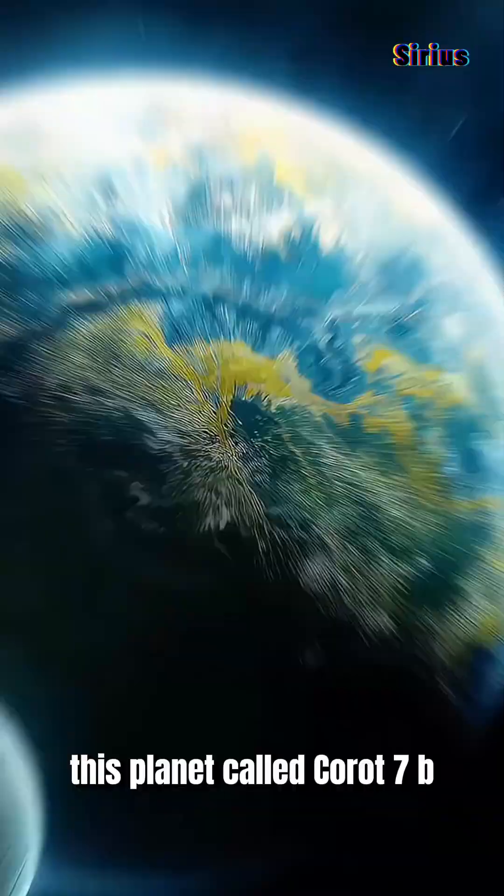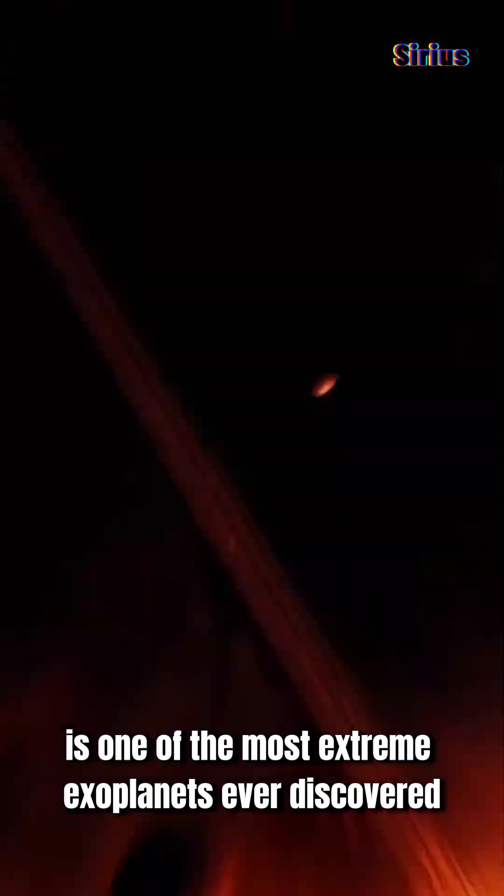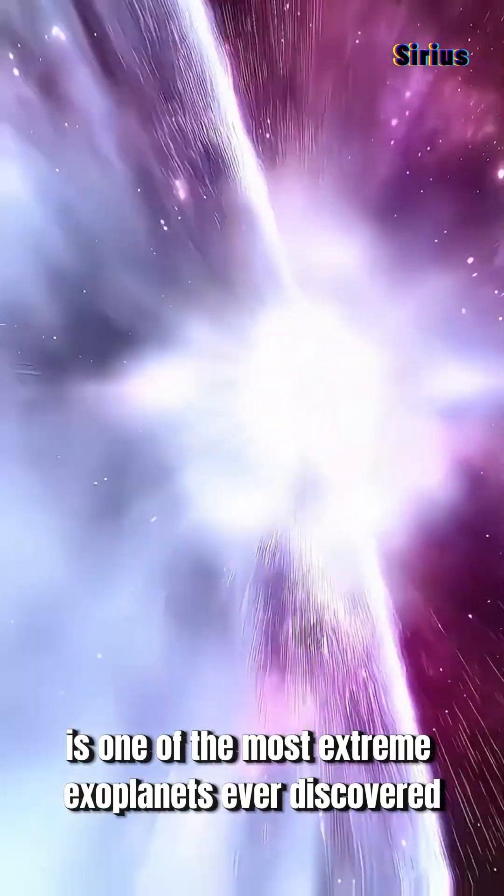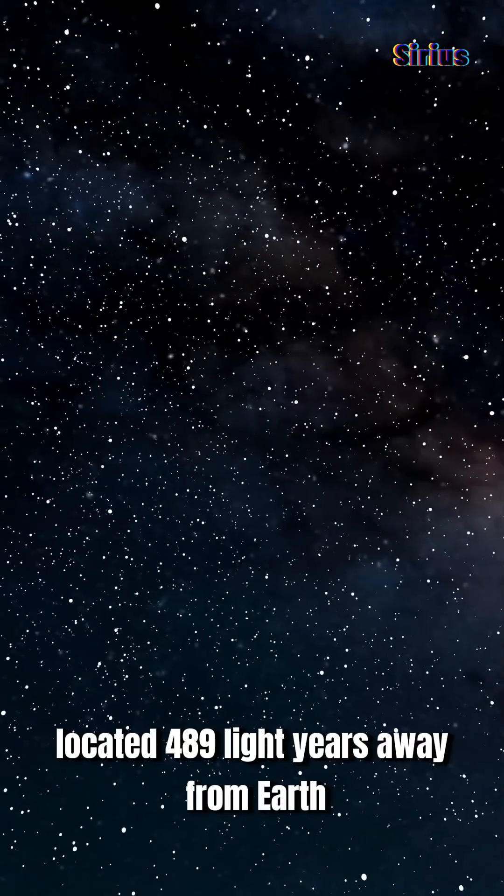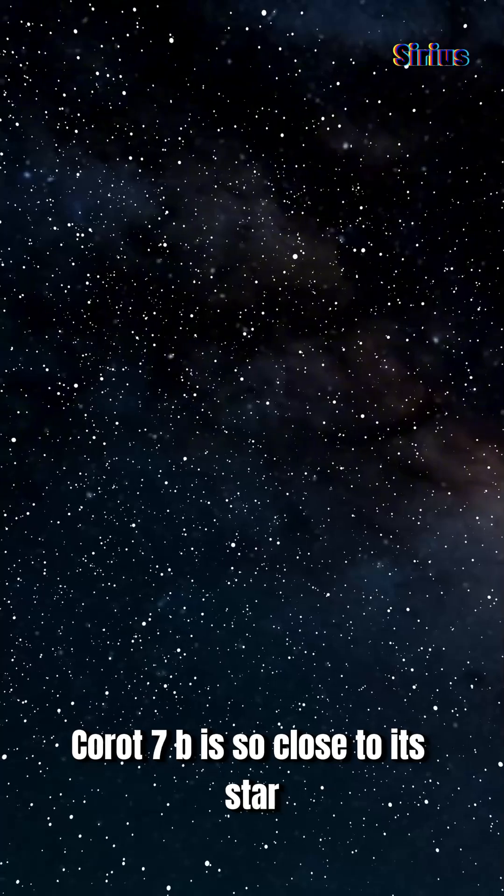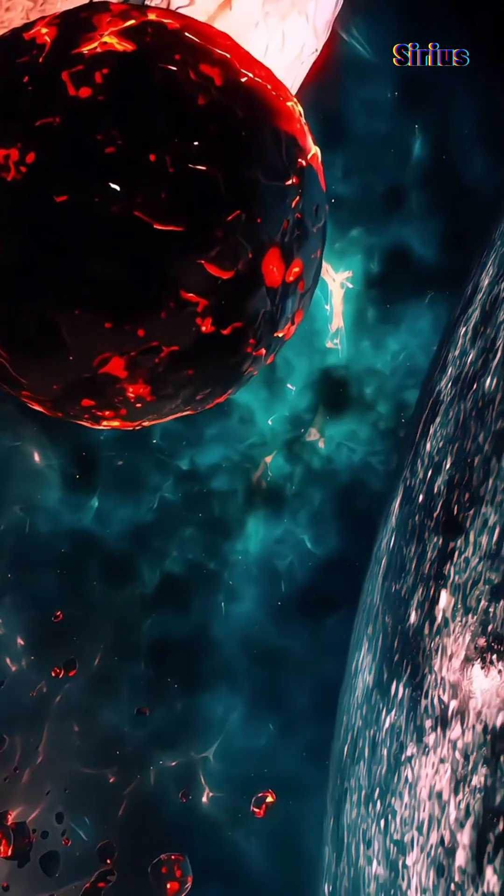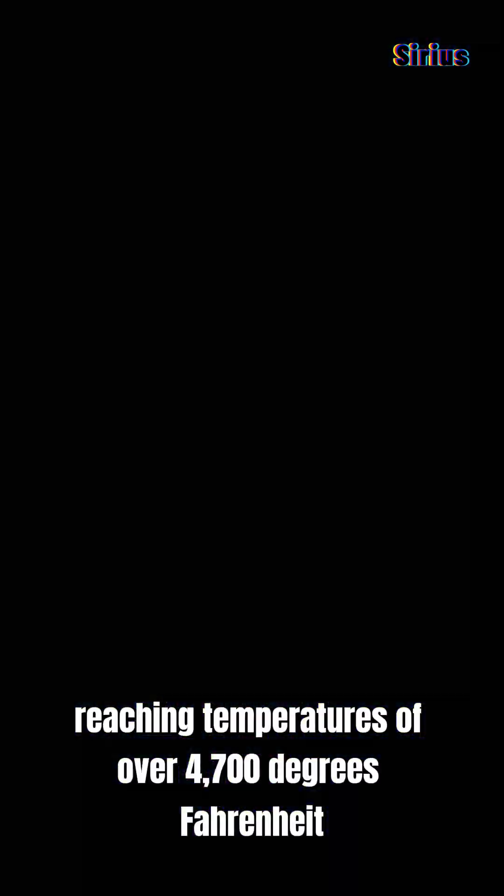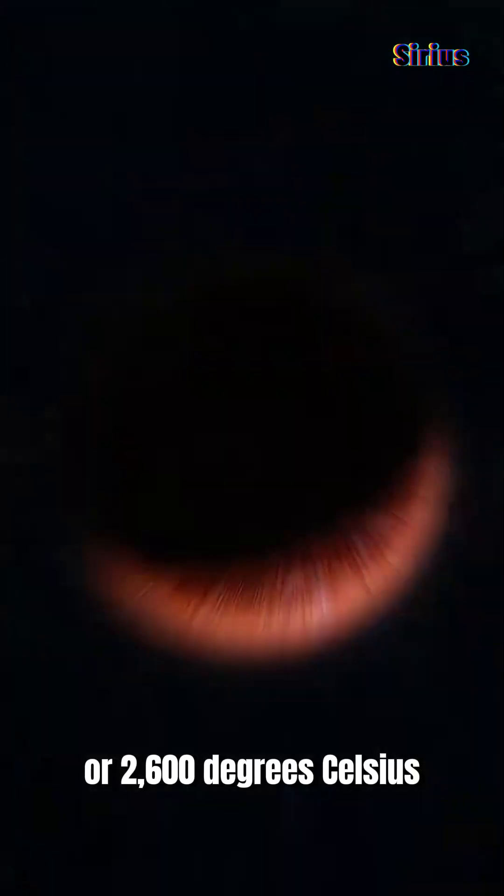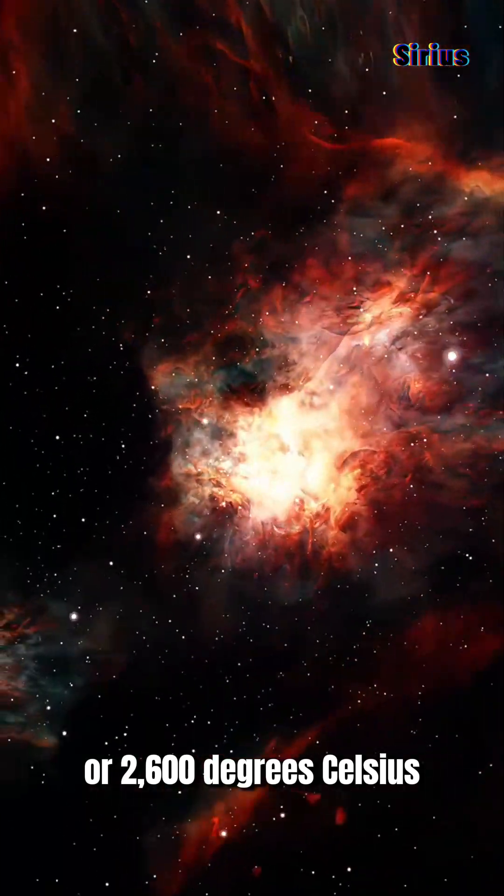This planet called Korat 7b is one of the most extreme exoplanets ever discovered. Located 489 light years away from Earth, Korat 7b is so close to its star that one side of the planet is always scorching hot, reaching temperatures of over 4,700 degrees Fahrenheit or 2,600 degrees Celsius.